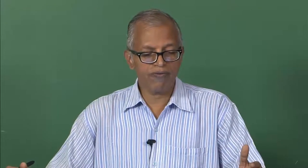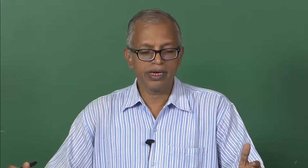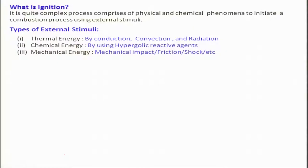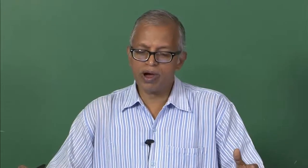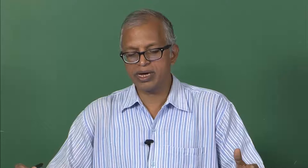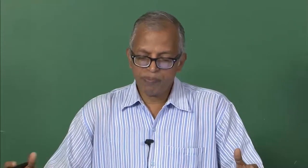Another way, which is also used, is mechanical energy — that is mechanical impact. You can give some impact, friction, or shock waves such that heat can be generated. For example, certain kinds of explosions are triggered by impact, as you might have seen in movies. A shock can also be given because impact may lead to a shock. Friction is very rarely used.